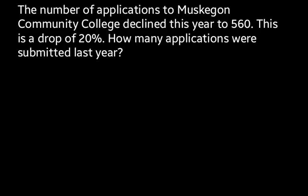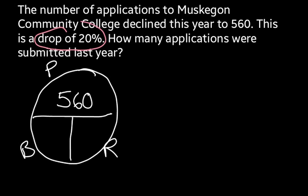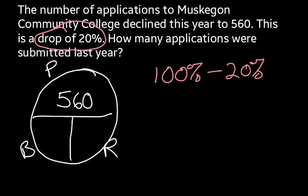Here's another example. The number of applications to Muskegon Community College declined this year to 560. This is a drop of 20%. How many applications were submitted last year? Looking at our PBR circle, the number of applications declined to 560, so that represents the portion. Now, hearing 'drop of 20%' tells us we're subtracting from 100, so we do 100 minus 20% to get 80%. This means 560 represents only 80% of what we had last year.